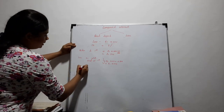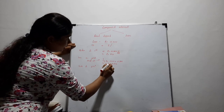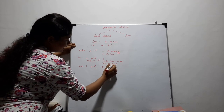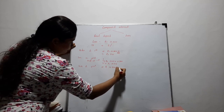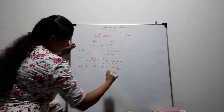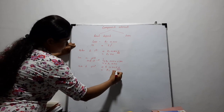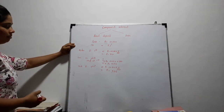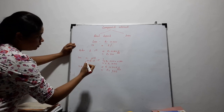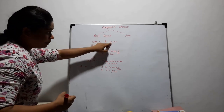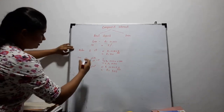Then the interest for the second year: the loan amount is 10,500 multiplied by 5 over 100, giving an answer of 525 rupees. Now to settle the loan, the amount we have to pay includes the loan amount as well as the interest of the first year and the interest of the second year.